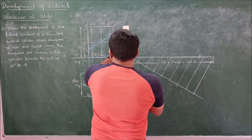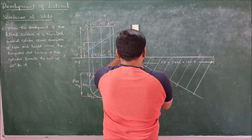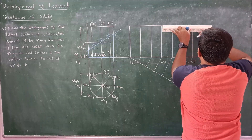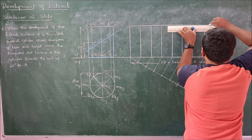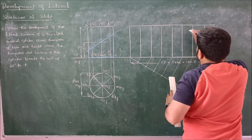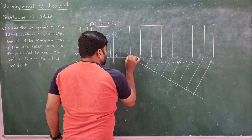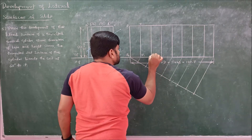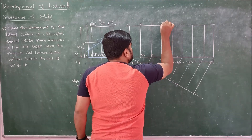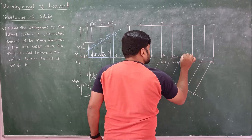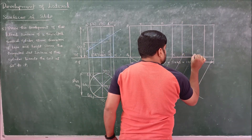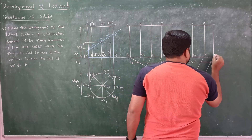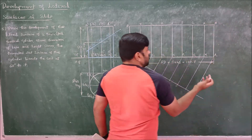Now mark the vertical height of 50 mm. Connect the top and bottom to complete the rectangle. Mark the generator lines as A1A, B1B, C1C, D1D, E1E, F1F, G1G, and H1H. Note that the first and last lines should be the same — both labeled A — because when folded, point A overlaps on itself.